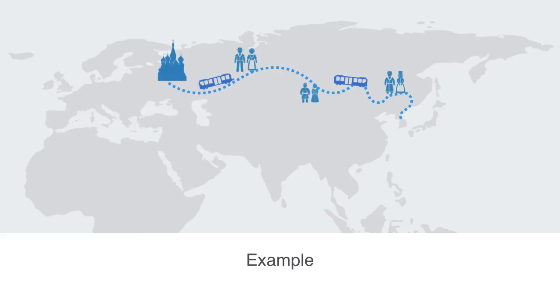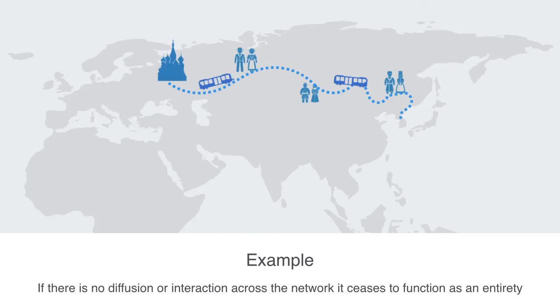We may be dealing with a very large system, but if there is no diffusion or interaction across the network, it ceases to function as an entire system.